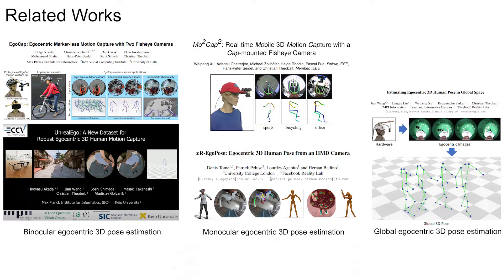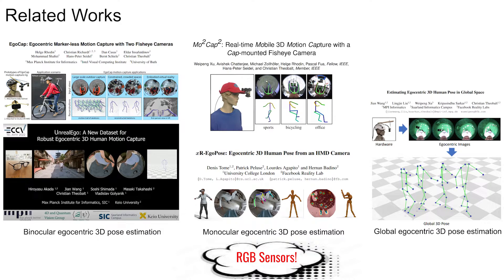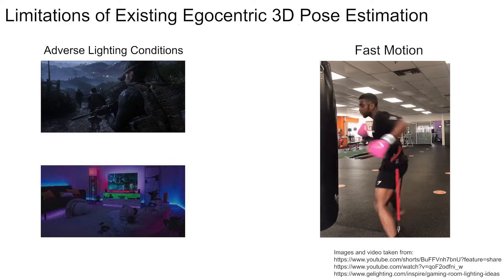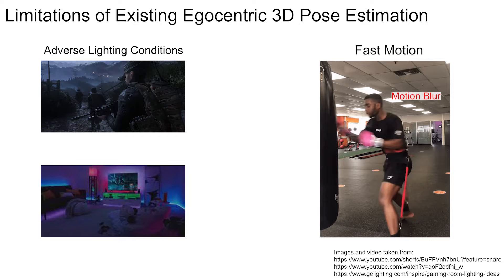While numerous works have performed 3D body pose estimation from egocentric views, the robustness of current methods in scenarios involving fast motions and low-light conditions remains a significant challenge. The primary factor contributing to this limitation is the reliance on RGB sensors in traditional approaches, which often leads to unreliable 3D body pose estimations in low-lighting and fast-paced motion environments.